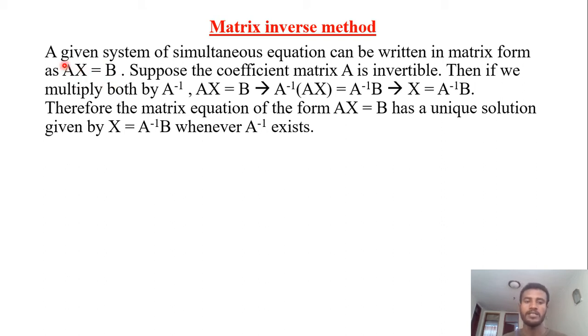That means A inverse times AX equals A inverse times B. Here A is cancelled by A inverse, then X equals A inverse B.